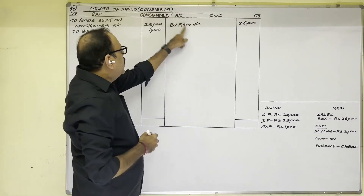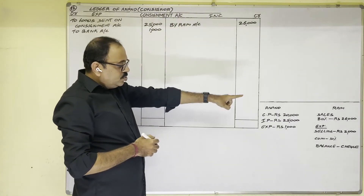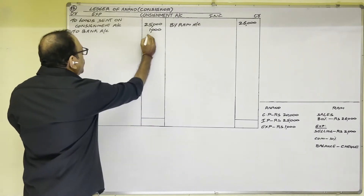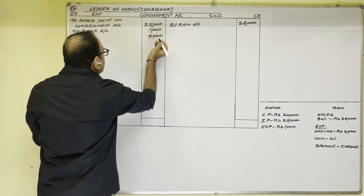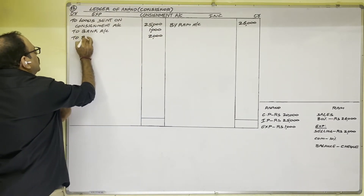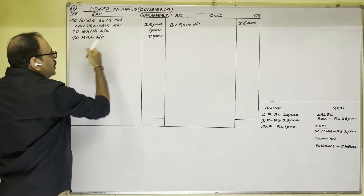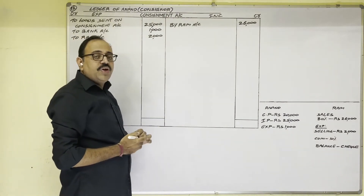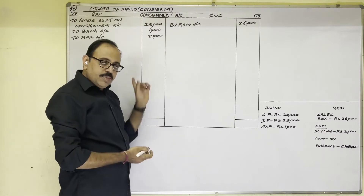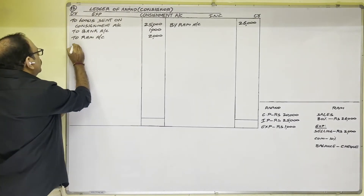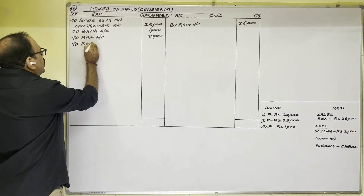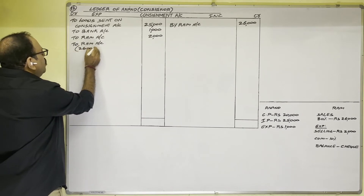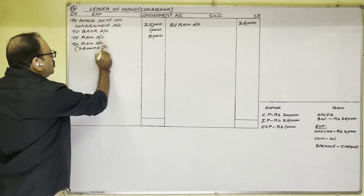For the consignee's expenses of 2,000 rupees, the entry is consignment account debit to Ram account. Next, for commission: commission is expenditure for the consignor — debit side only — we should write to Ram account since we have to pay him. So for commission also: consignment account debit to Ram account. Commission is 10% on sales of 26,000, which we should calculate — that is 2,600 rupees.